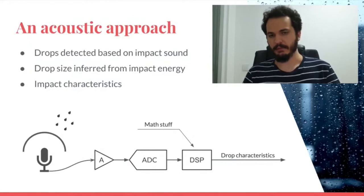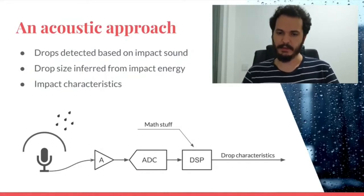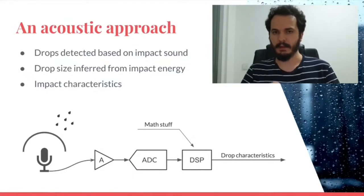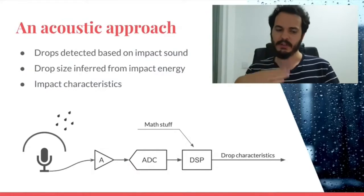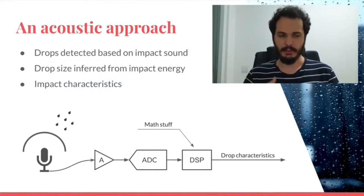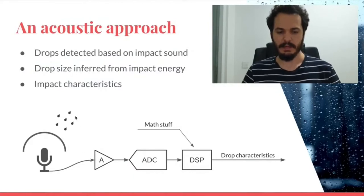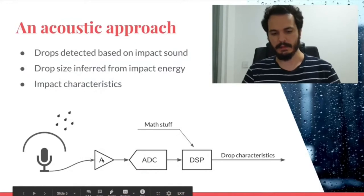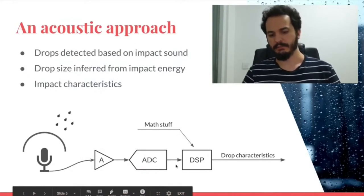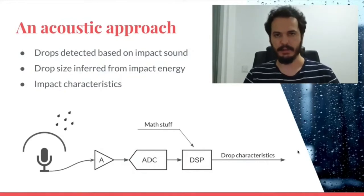Besides robustly measuring rainfall, we can also measure hail, because hail drops hit the housing and release much higher acoustic energy than raindrops. The idea is a dome housing with the microphone and electronics inside. When rain hits the housing it generates sound, the microphone picks it up, it's amplified, converted to a digital signal, and goes into DSP processing which infers the characteristics of each raindrop.